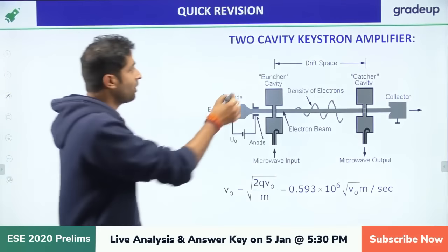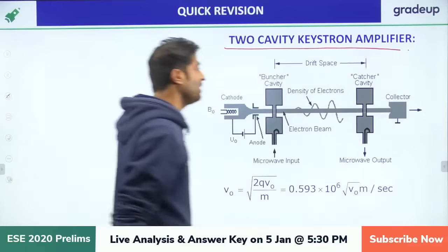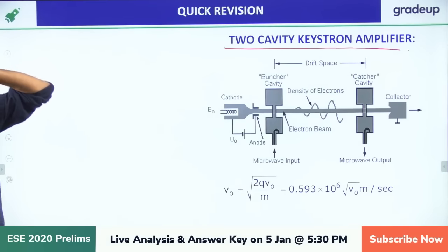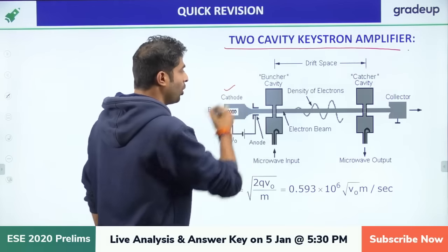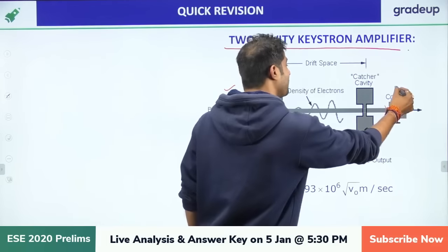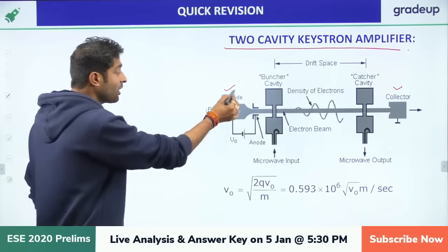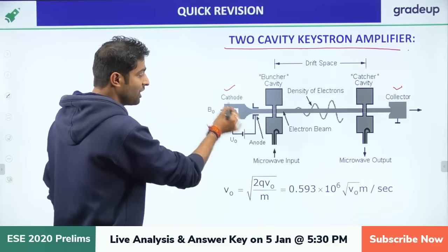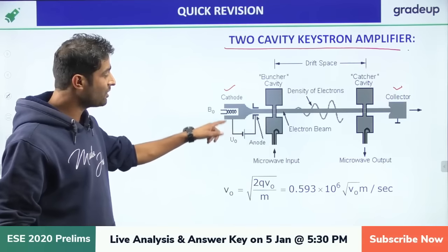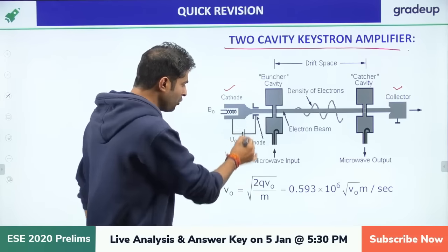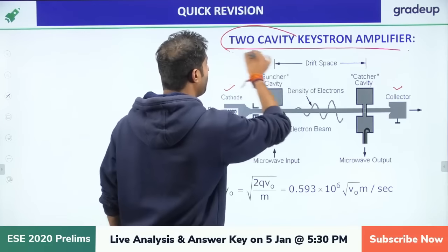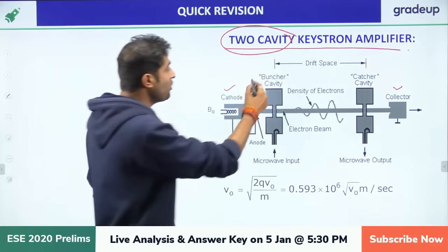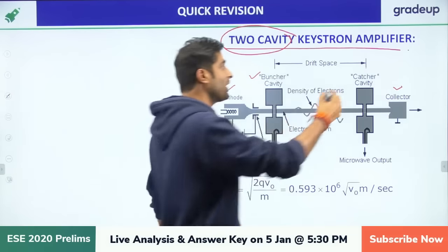We are going to discuss the two-cavity klystron amplifier — it is just a microwave amplifier. In this structure there is one cathode and one anode, which we can call the collector. At the cathode there is an electron gun supplied to the negative terminal of the battery. There will be two cavities — that's why the name is two-cavity.